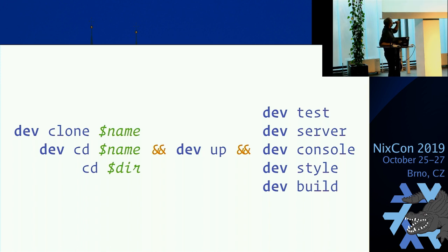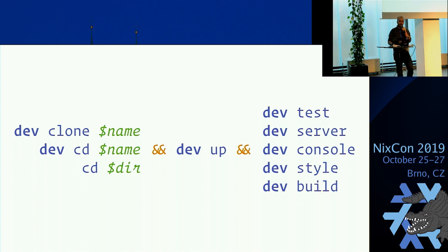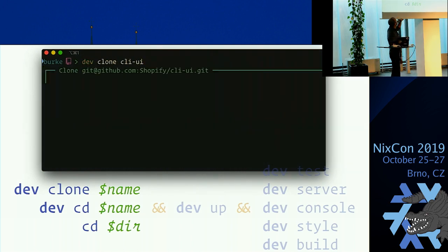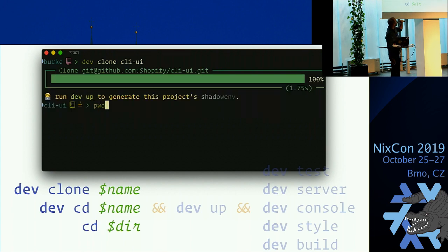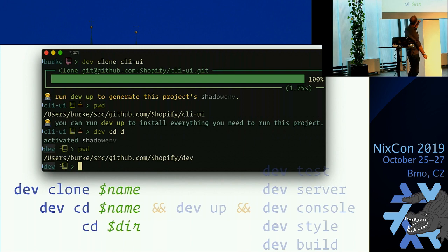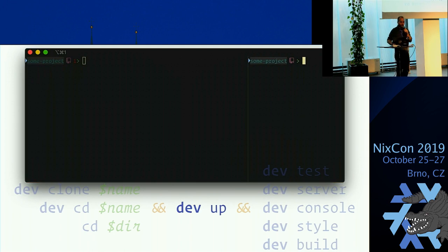Dev has three groups of commands. On the left, you have locating codebases. The middle is a command that sets up all of the dependencies to run that project. And on the right, there are a few standardized keywords that we encourage people to implement. You can clone a project using the short name — it locates it on GitHub, clones it, and automatically changes into that directory. We also have a dev CD command that fuzzy matches based on all the projects that exist on the system, using a shell hook which lets us change the directory.